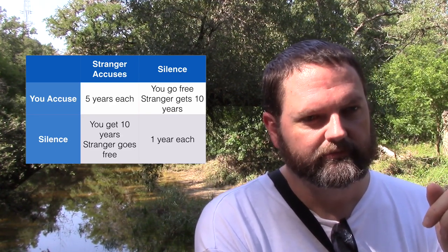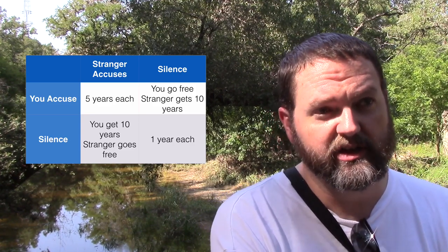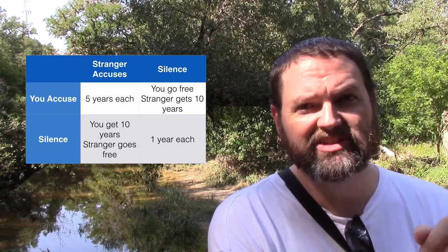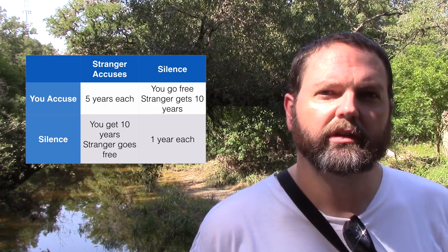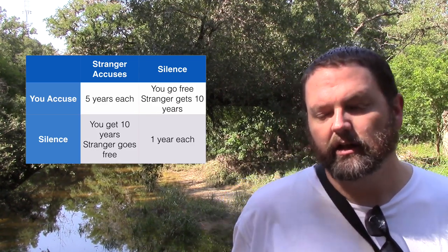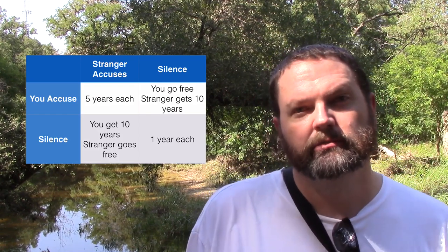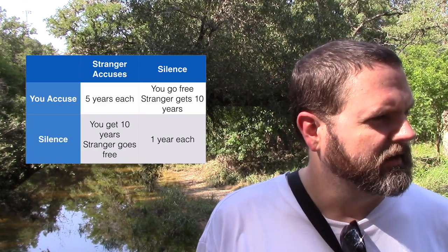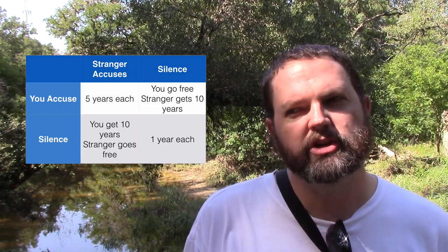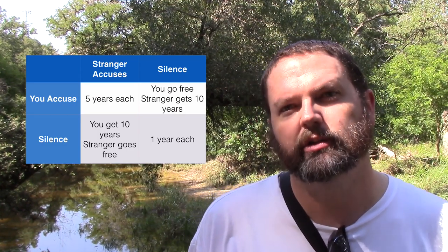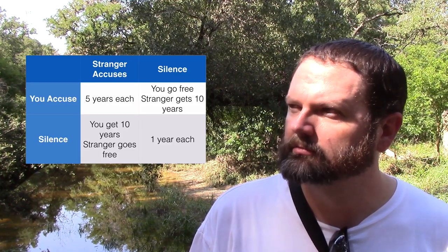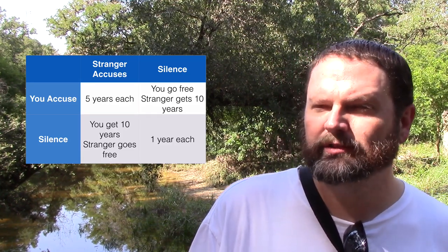In the second case, if he confesses and you remain silent, then you go to jail for 10 years. But if he confesses and you also confess, then you only go to jail for 5 years. So you spend less time if you confess. What that means is, no matter what this stranger does, you spend less time in jail by confessing. So it seems like the rational thing to do in this situation is to confess — to accuse the other and send him to jail. But now look what happens: if both of you do the rational thing, you both spend 5 years in jail.